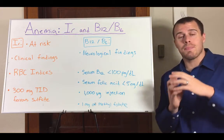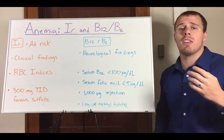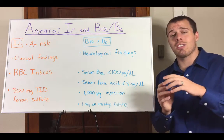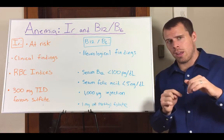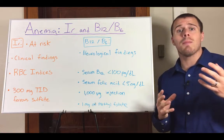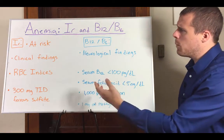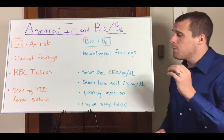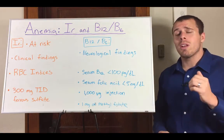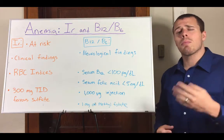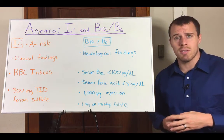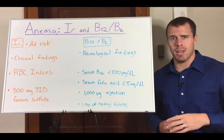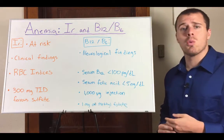For color, we look at MCHC, mean corpuscular hemoglobin concentration. If that's below 32, the red blood cell isn't red enough — there's too much pallor, making it hypochromic. To treat iron anemia, we use 300 milligrams of ferrous sulfate three times a day, taken about one hour before a meal, preferably with vitamin C to help absorption. For heavy milk consumers, we want to limit intake to one pint of milk per day.